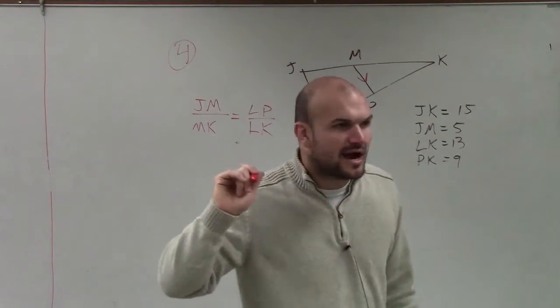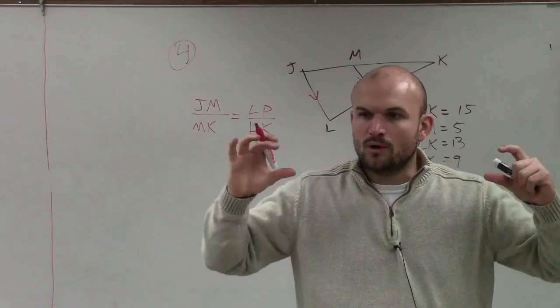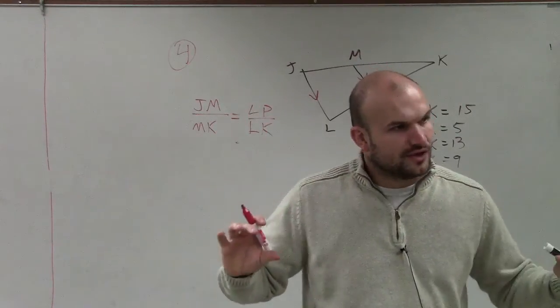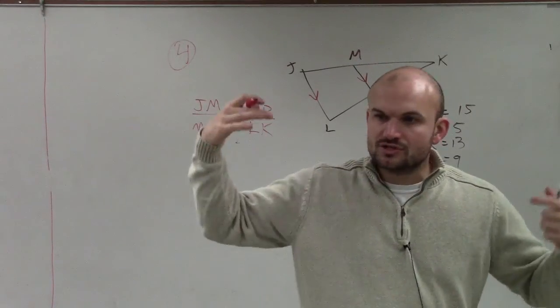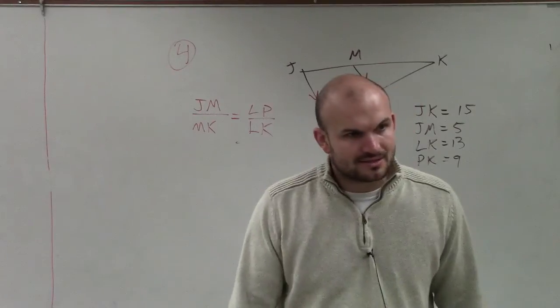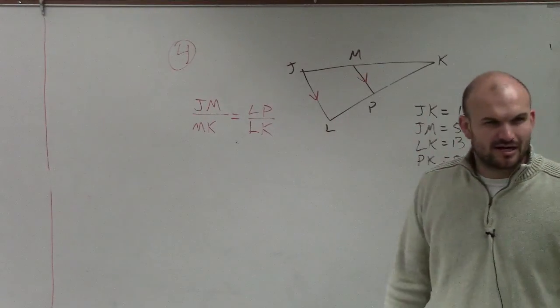Obviously it was a different triangle, but that's what we were talking about. The ratio of one side to another is proportional to the other when you have parallel lines of a triangle. Does everybody remember that?